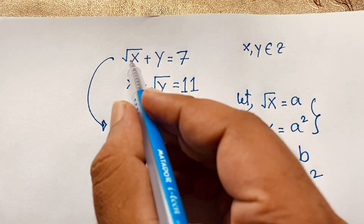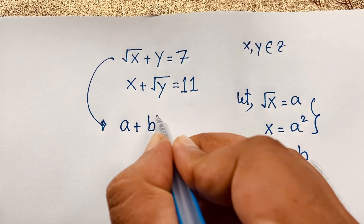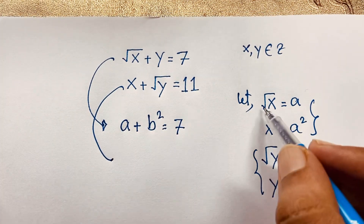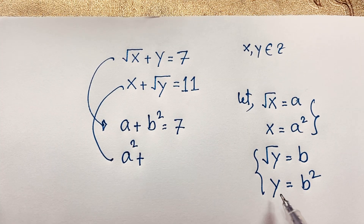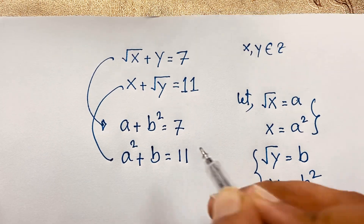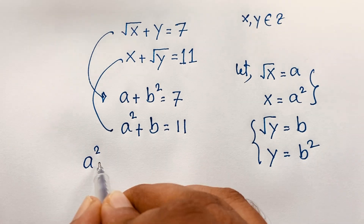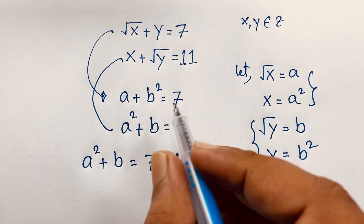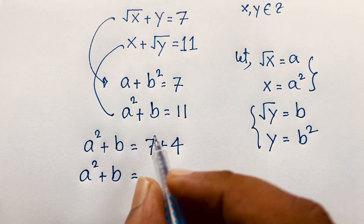In the first equation, square root of x becomes a, and y becomes b squared, so a plus b squared equals 7. In the second equation, x becomes a squared and square root of y becomes b, so a squared plus b equals 11.